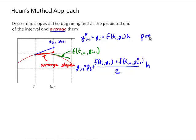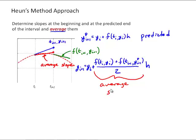Unlike the midpoint method where we predicted the value at half the interval, Heun's method predicts the value at the end of the interval, t_i+1. Then we take the average slope — our dy/dt function evaluated at the current time step plus our dy/dt function evaluated at our predicted y value at the next time step, divided by 2 — and use that average slope times h to get our next value y_i+1.